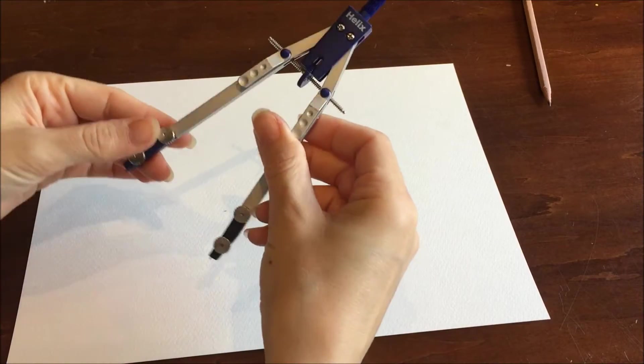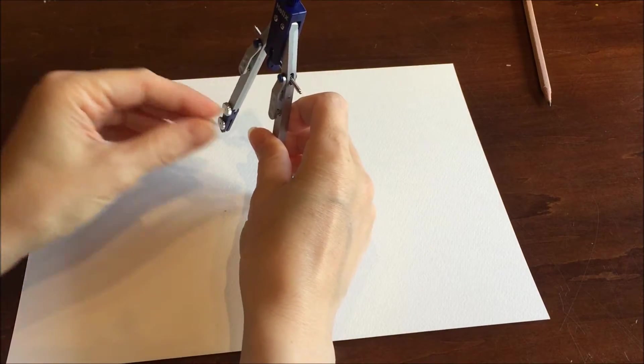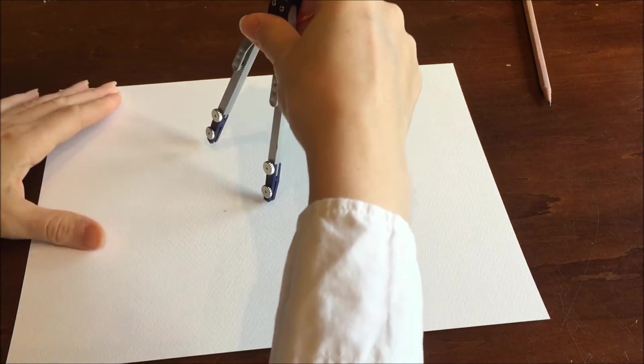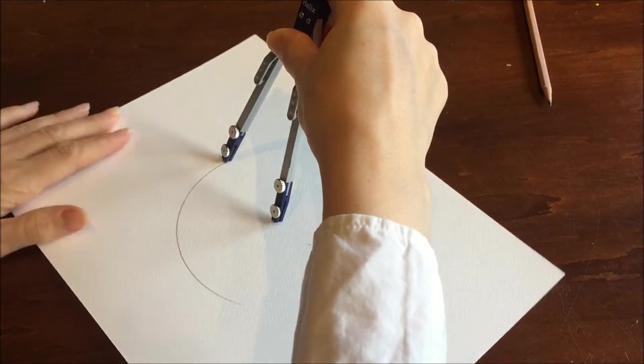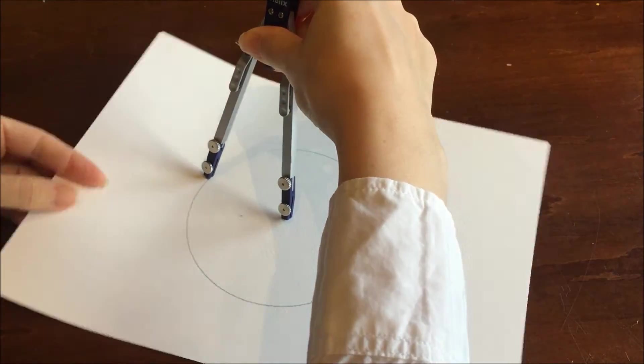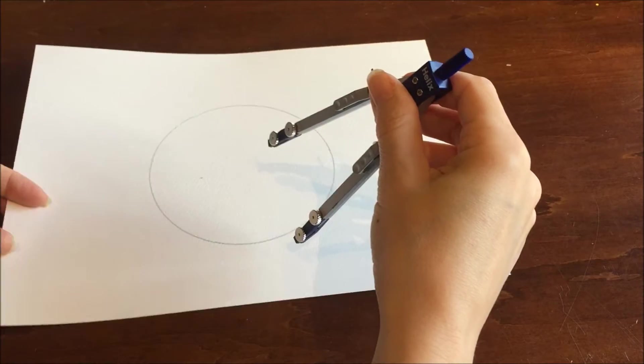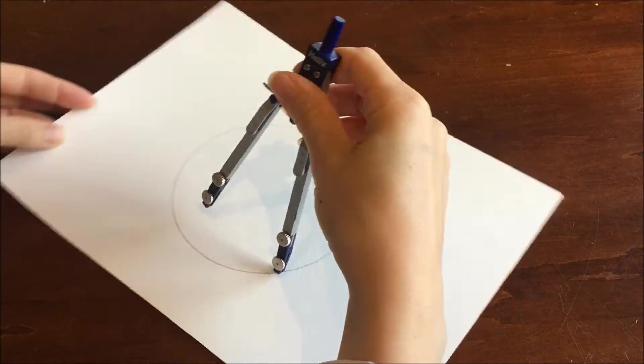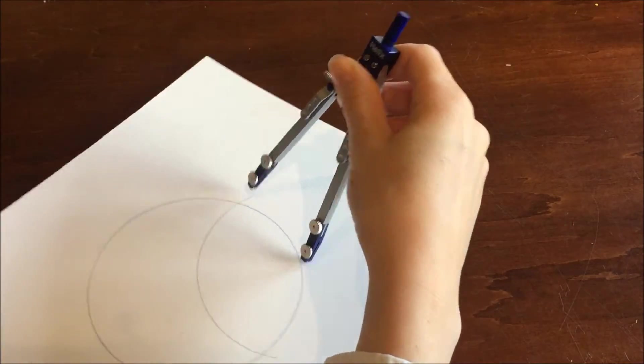The first thing is you want to draw your circle in the center of the page, making sure that your compass doesn't change sizes as you're drawing. Once you're done making your circle, position your pointer on the outside of the circle and draw an arc that intersects the circle.